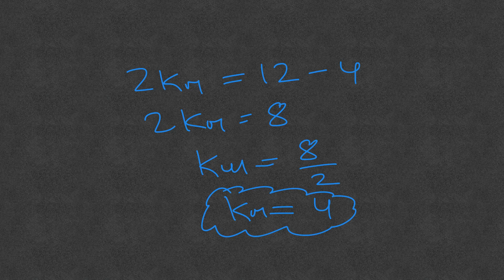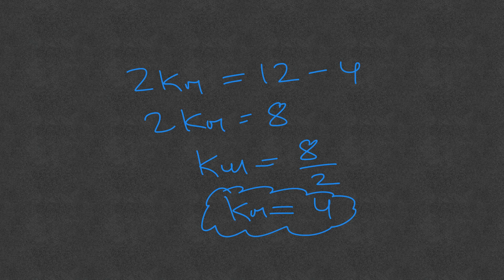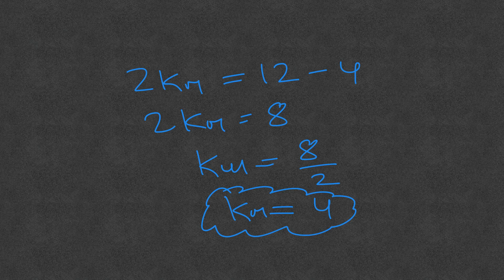Km equals 4 — which is exactly the value we started with in the original problem. In that problem we had Vmax = 6, substrate concentration = 2, Km = 4, and we got Vi = 2. We then used that Vi and removed Km to recalculate it, and we got 4 again. This confirms that the method for calculating Km when the other values are given is correct.